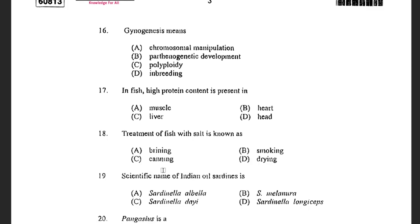Next question: Gynogenesis means — options are chromosomal manipulation, parthenogenetic development, polyploidy, and inbreeding. The answer is parthenogenetic development. Gynogenesis is a process of formation of an embryo with maternal genetic information only.